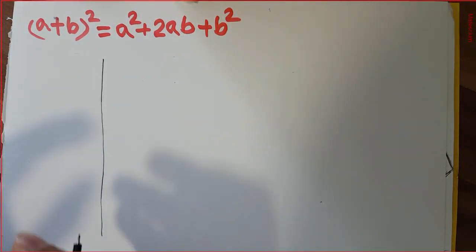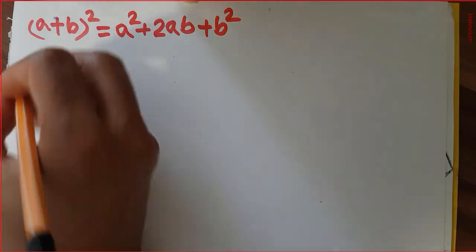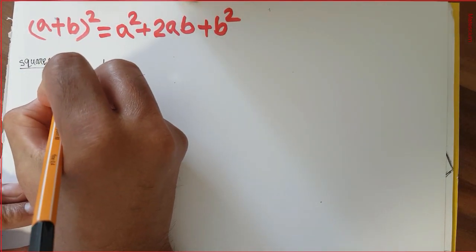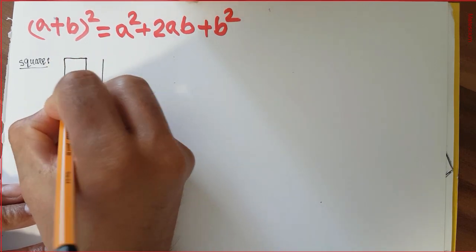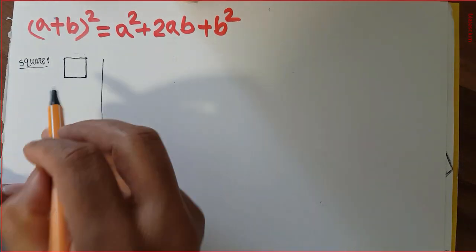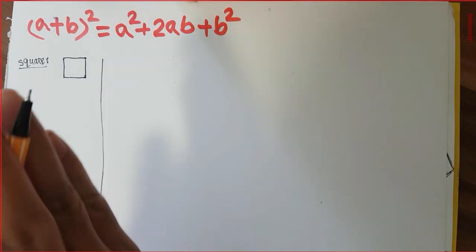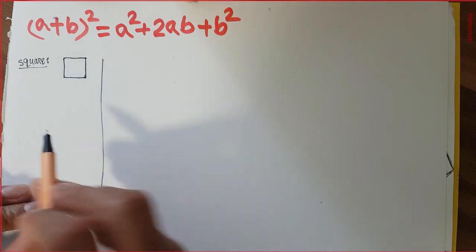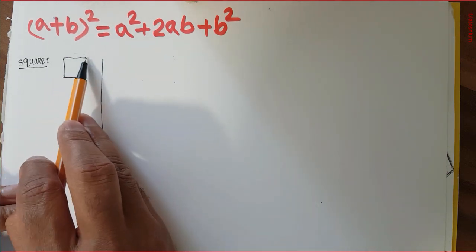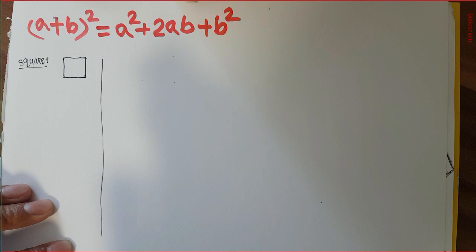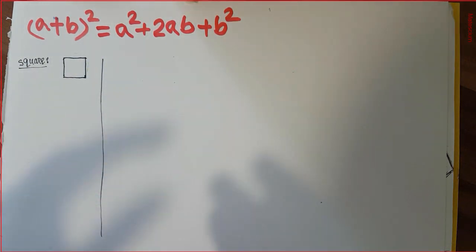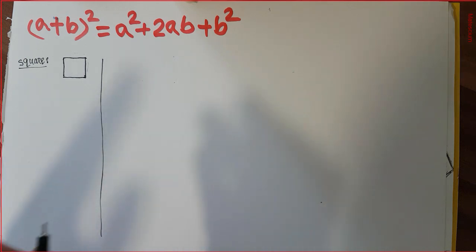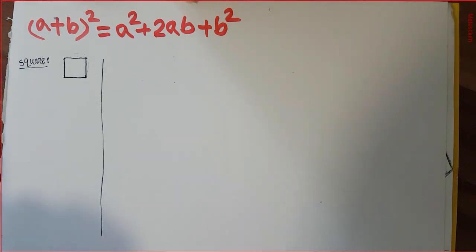Before going to the main calculation, let me show you what exactly 'square' means. A square means a confined area covered by four sides, where the length of each side is exactly equal to the others — this side, that side, that side, and that side are all the same. In that case, this confined area is called a square. This is the general definition of a square.